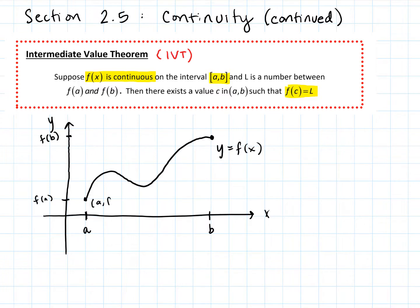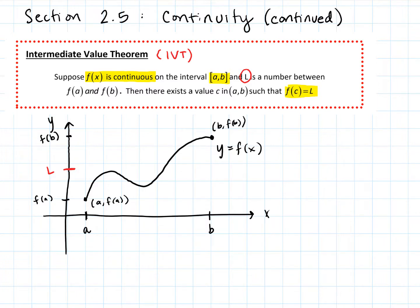So here's this ordered pair A, F of A, and as we traveled from that point we made sure to draw a continuous function to B, F of B. We have this nice continuous function. What the Intermediate Value Theorem says is: if you pick any number L that is between F of A and F of B, go to your Y axis, identify where F of A and F of B lie, pick any number L in between those two, and draw a horizontal line across the graph.